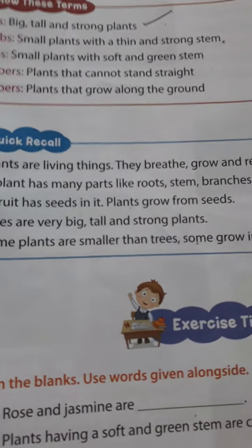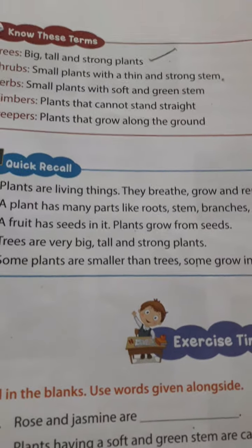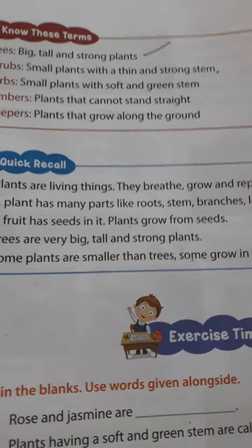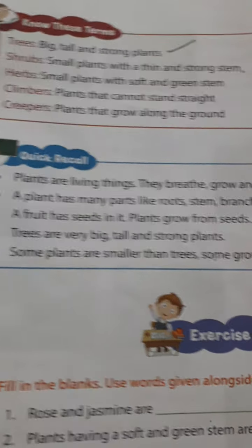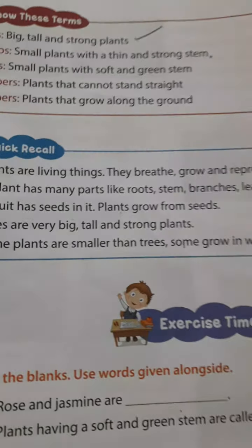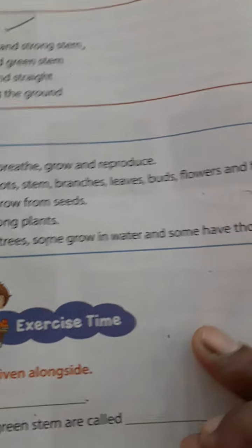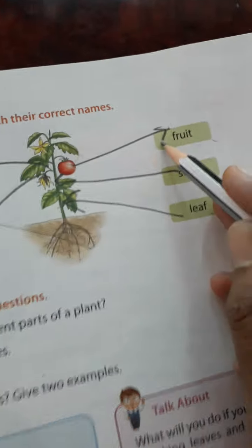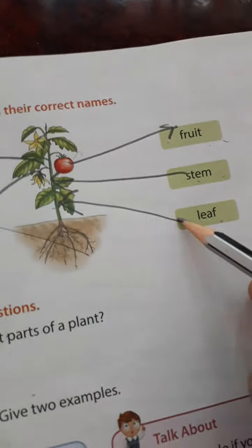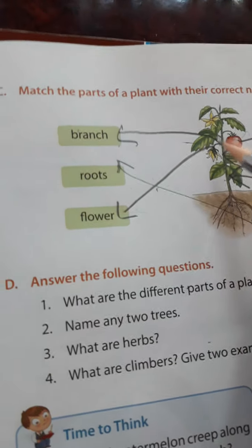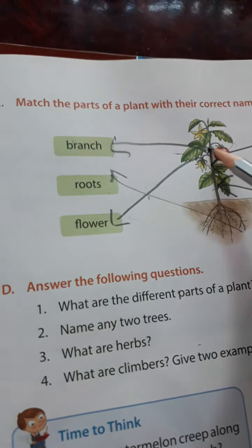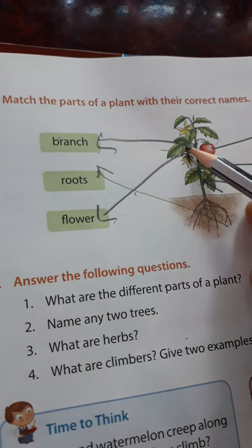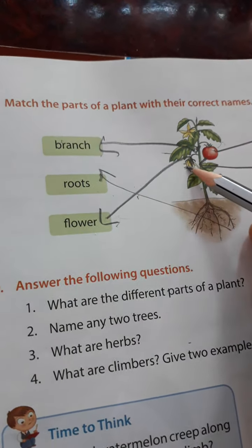Very big, tall, and strong plants have a thick, strong, brown, woody part known as the trunk. Some plants are smaller than trees; some grow in water and some have thorns. Now let's look at the parts of a plant. This is a fruit. This is a stem. This is a leaf. This part is the branch. This part is the root. And this part is the flower.